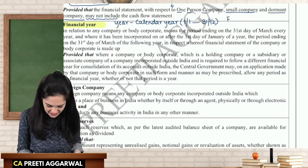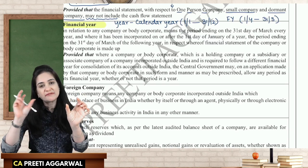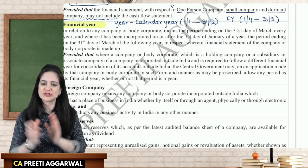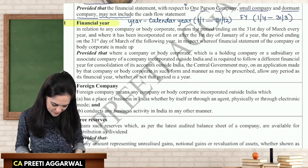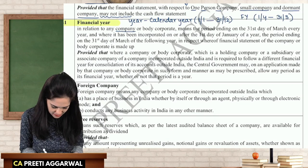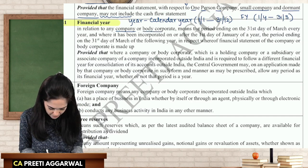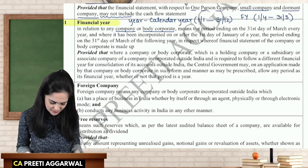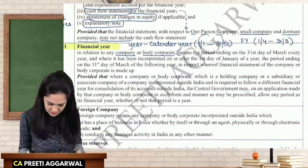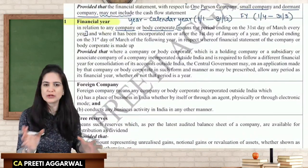Year is the calendar year. Financial year begins from 1st April to 31st March. Every chartered accountant is aware of this term. In relation to a company or body corporate, financial year means the period ending on 31st March every year.